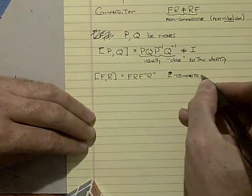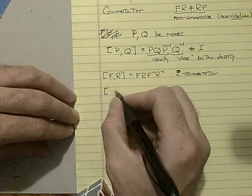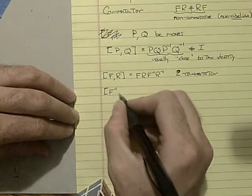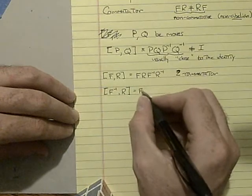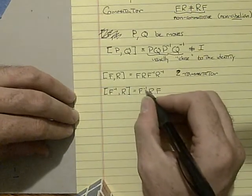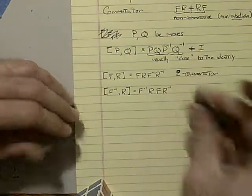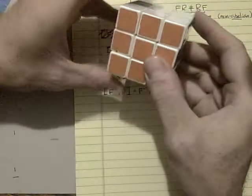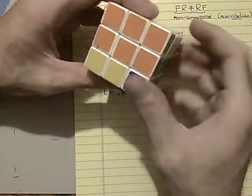There's another commutator. And this would be F inverse commutator R. So you do F inverse, then do R. Now the inverse of an inverse is just the move, so F, then R inverse. Let me show you what that one looks like. So F inverse, R, F, R inverse.